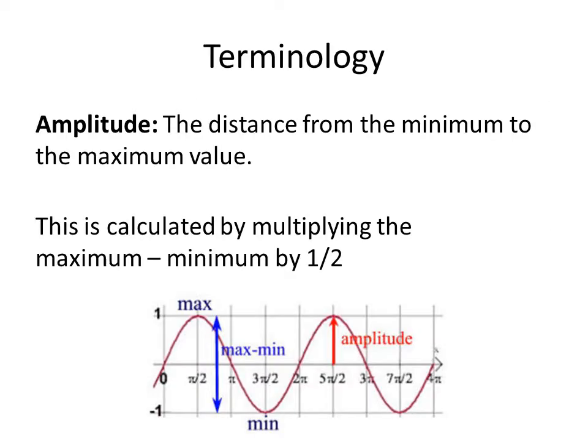For us to have an understanding of each of these three different trig functions, we need to understand a little bit of terminology. The first key piece is what they call the amplitude. The amplitude is simply your distance from the minimum value of your function to the maximum, and it's calculated by multiplying the difference between the maximum and the minimum by one-half.